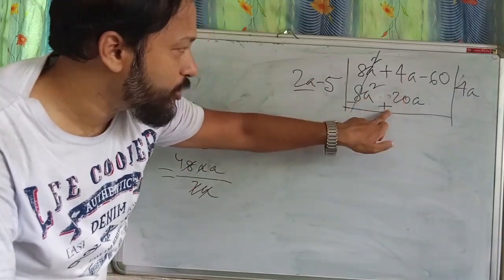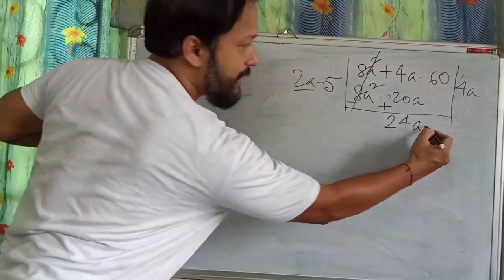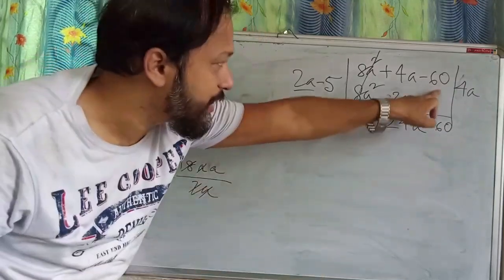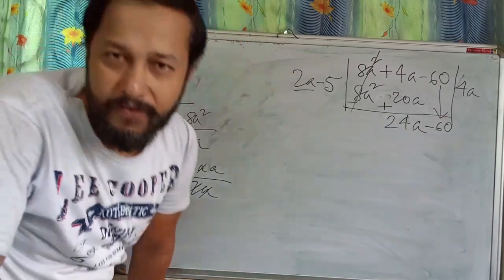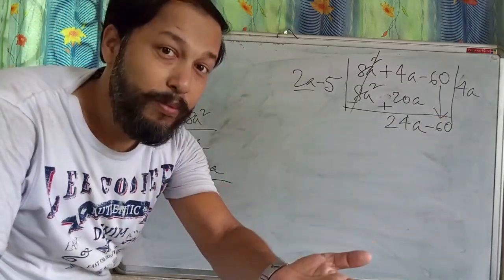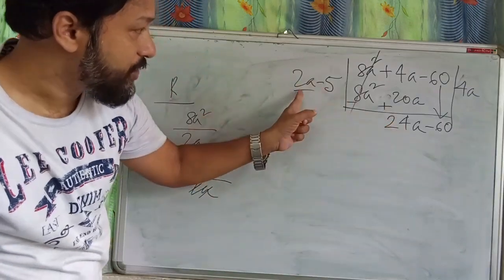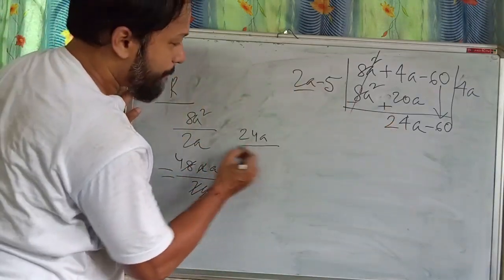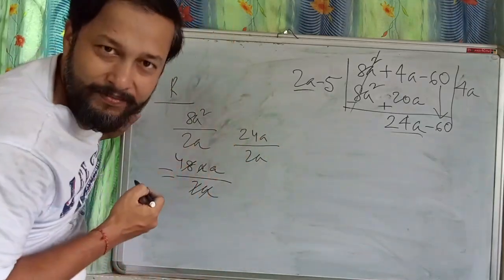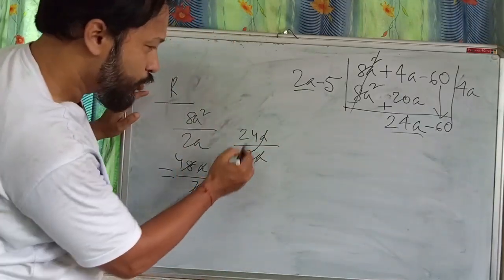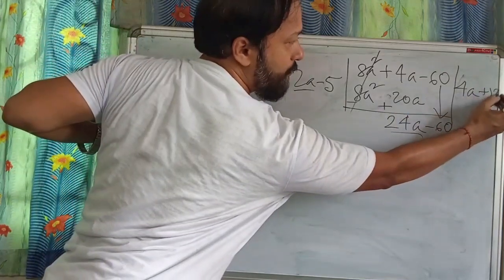Plus 4a plus 20a gives 24a. The constant minus 60 comes down. Now apply the same process again — first term by first term: 24a divided by 2a. The a's cancel, and I get 12. So I write plus 12 in the quotient.